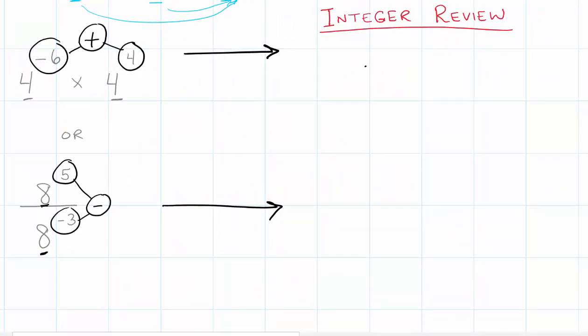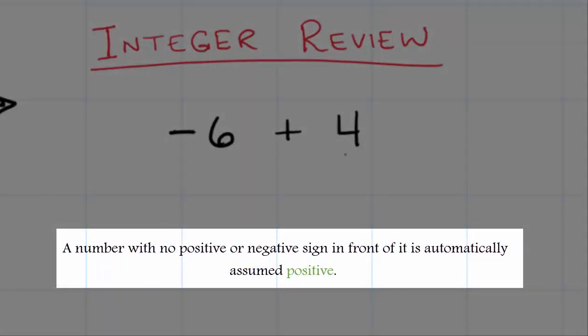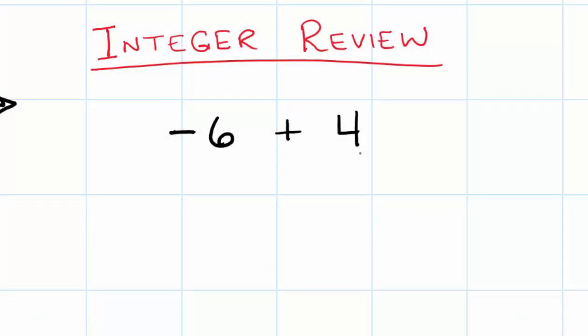Alright, so I'm going to take negative 6, my addition sign that we have, and my 4. And one of the things that I teach my kids all the time is if you have a 4 that's just by itself and there's no sign in front of it, we need to know that that's a positive number. Now, what we have here is we have two terms. We have a negative 6 and we have a positive 4.